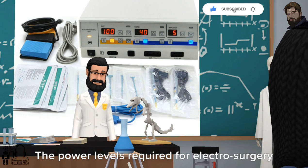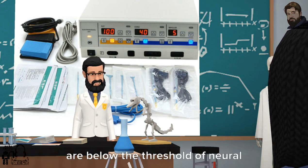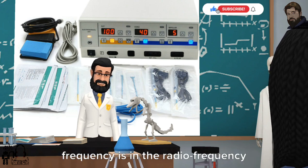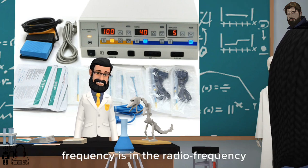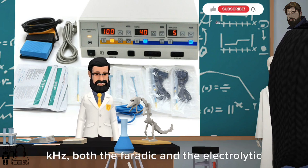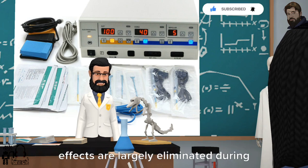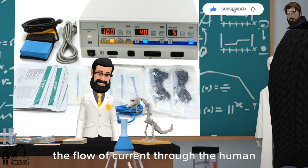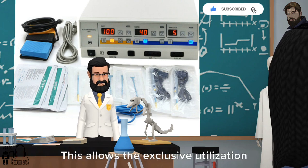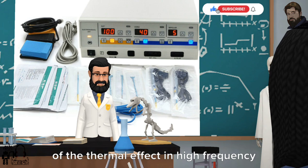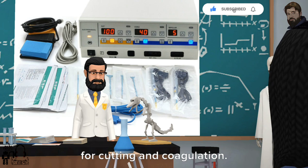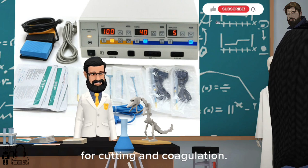The power levels required for electrosurgery are below the threshold of neural stimulation provided that the diathermy frequency is in the radio frequency range. When the frequency is at least 300 kHz, both the Faradic and the electrolytic effects are largely eliminated during the flow of current through the human tissue. This allows the exclusive utilization of the thermal effect in high frequency surgery providing both the applications for cutting and coagulation.